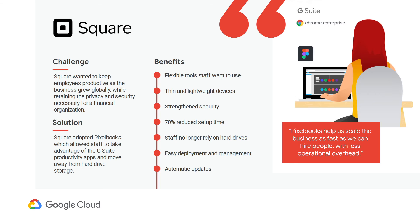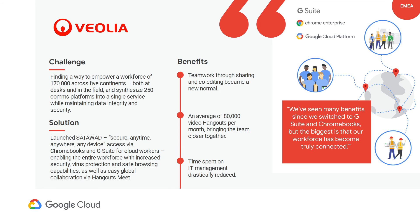Square adopted Pixelbooks, which allowed staff to take advantage of the G Suite productivity apps and move away from hard drive storage. In EMEA, utilities provider Veolia implemented its SATAWAD — Secure Anytime, Anywhere, Any Device — program, with the goal of moving its workers to Chromebooks and G Suite. As a result, they've been able to connect their global workforce more efficiently and drastically reduce the amount of IT overhead required.